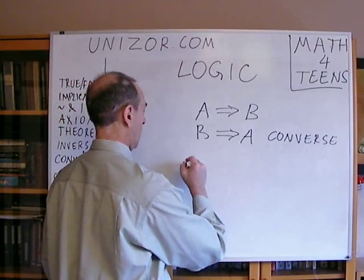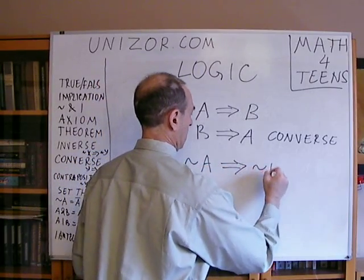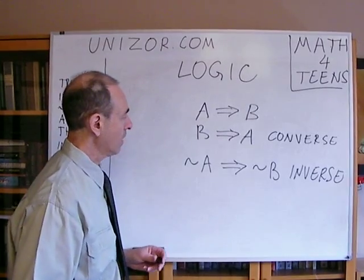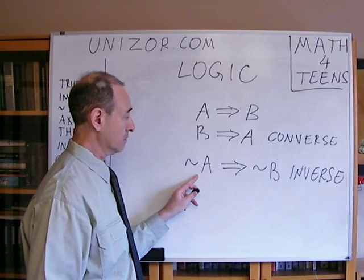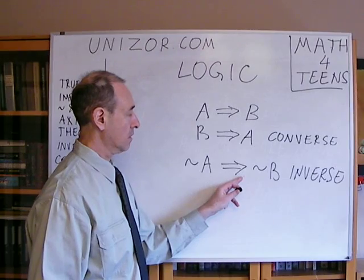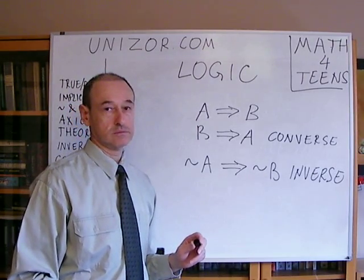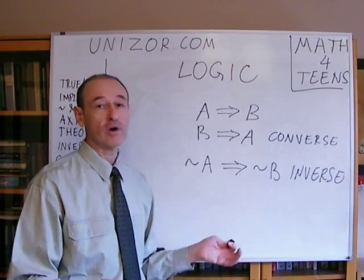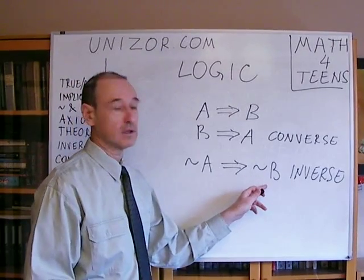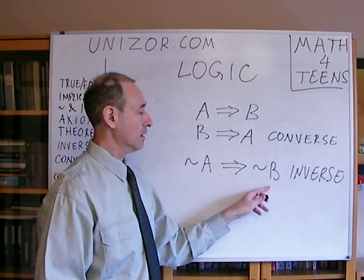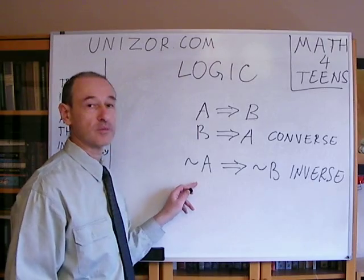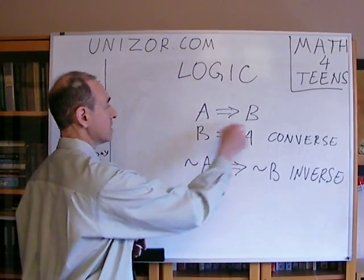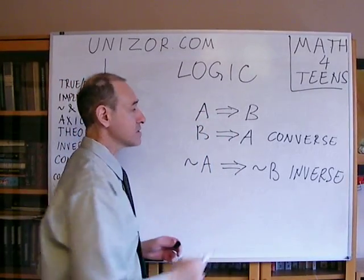Another variation is the inverse theorem. Example: 'I am not a man, therefore I am not a living being.' Is this right? No, this is not correct. Flowers and butterflies are not men but they are living beings. You cannot derive 'this is not a living being' from 'this is not a man,' because there are definitely other non-men that are still living beings. If the direct theorem is correct, the inverse theorem is not necessarily correct.